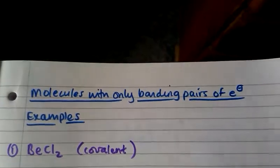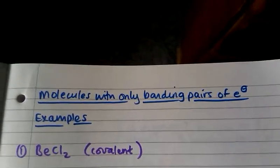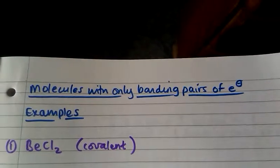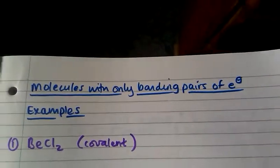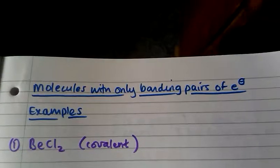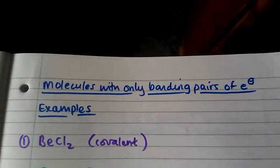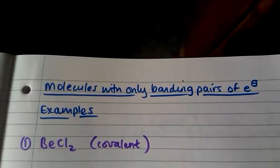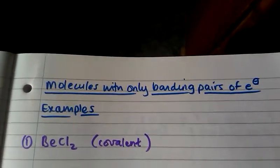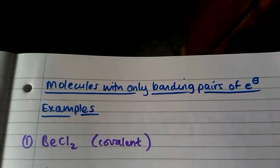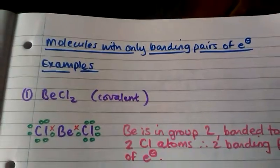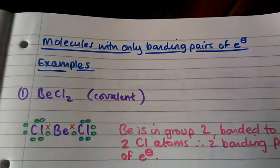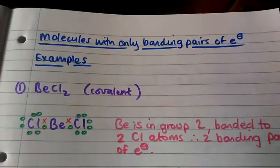Now I'm going to go through examples on how to determine the shapes of molecules when we have only bonding pairs of electrons present. First, beryllium chloride, BeCl₂ — it's a covalent molecule and we can draw out the dot and cross diagrams for this.